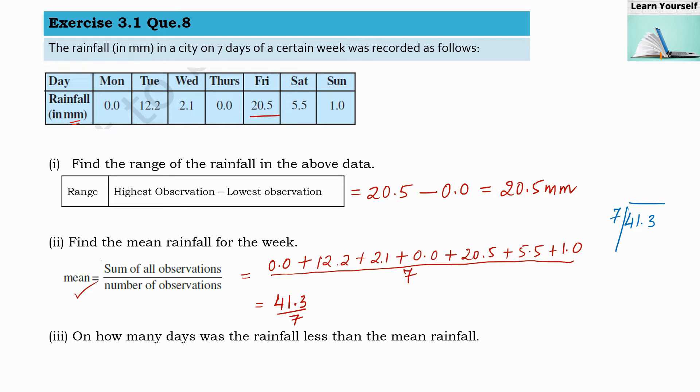Seven sixes are 42, so we cannot take that. Seven fives are 35. If I am taking 35 here I will get six, and then I am taking this three down.